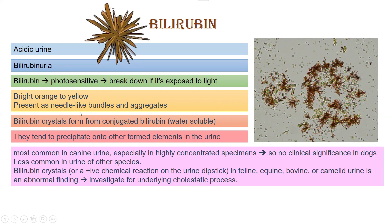Bilirubin is bright orange to yellow in color, as you can see in its picture. They are present as needle-like bundles and aggregates, as you can see in this image. Bilirubin crystals form from conjugated bilirubin, which is water soluble — you should remember this too.